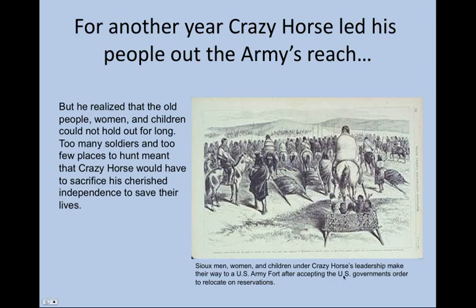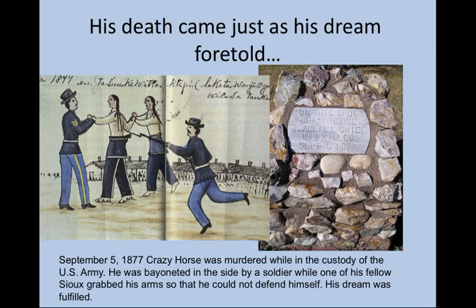Sioux men, women, and children under Crazy Horse's leadership made their way to a U.S. Army fort after accepting the U.S. government's order to relocate on reservations. His death ultimately came just as his dream foretold. On September 5, 1877, while in the custody of the U.S. military, Crazy Horse was murdered — bayoneted in the side by a U.S. Army soldier while one of his fellow Sioux grabbed his arms so that he could not defend himself. It seems his dream had been fulfilled: in part, his own people had risen up to betray him. The U.S. Army had already co-opted and bribed some of Crazy Horse's own rivals to help in his capture and ultimately his death.